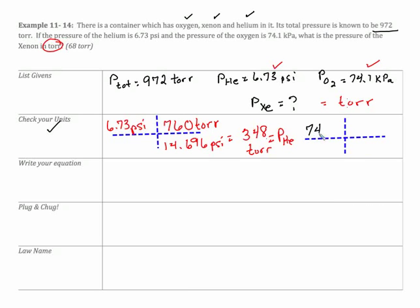Now, let's take a look at the oxygen. 74.1 kilopascals. I want to eliminate kilopascals, go to torr. If you look on your formula chart, 760, 101.33. And I get a pressure of my oxygen now equal to 556 torr.